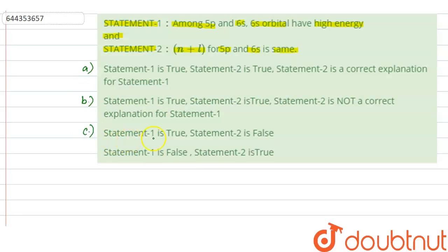Option C: statement 1 is true, statement 2 is false. And option D: statement 1 is false, statement 2 is true. So in this question, two statements are given and we have to check whether these statements are true or false.